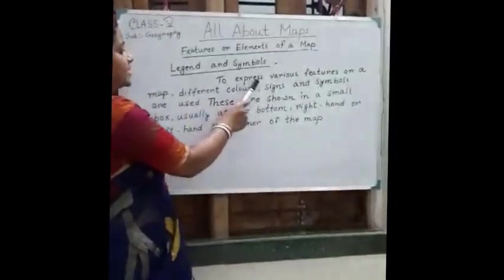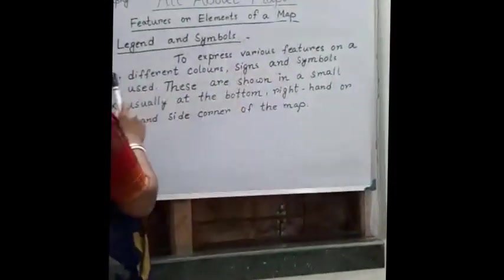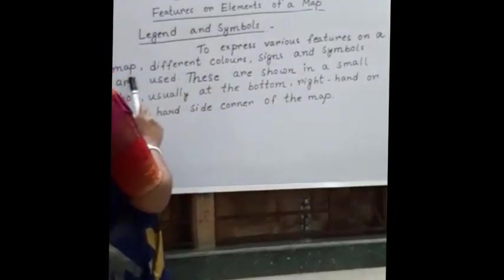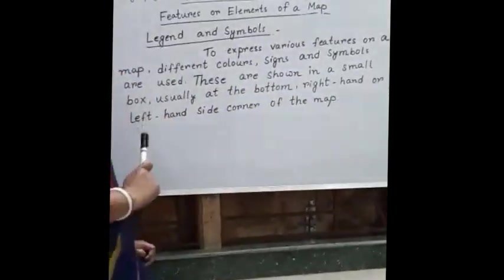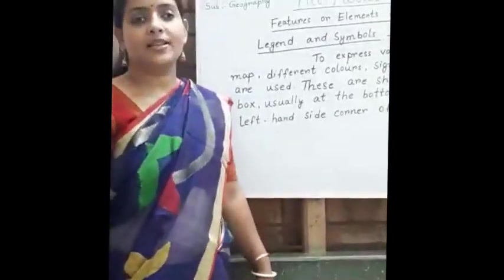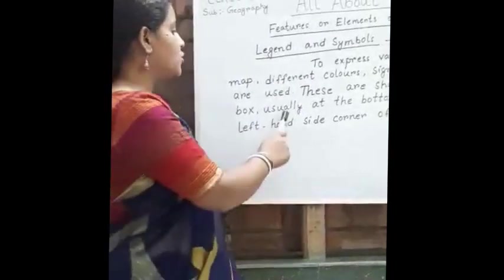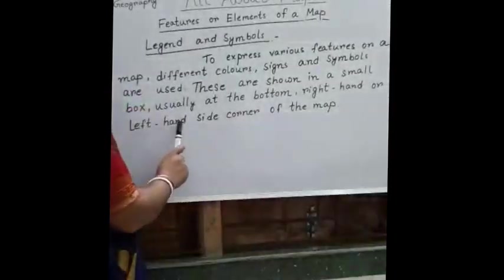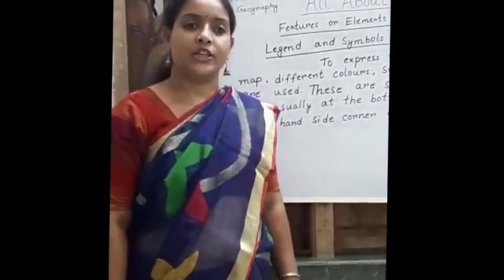To express various features on a map, different colors, signs and symbols are used. These colors and symbols are shown in a small box, usually at the bottom, right hand or left hand side corner of the map. This box is called legend.